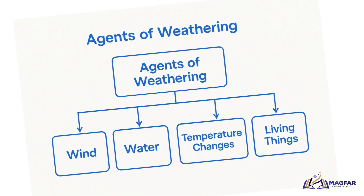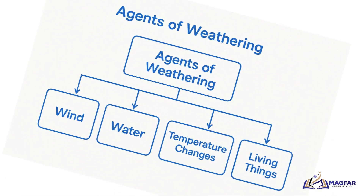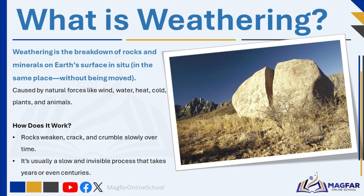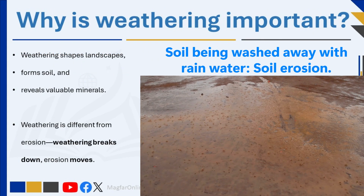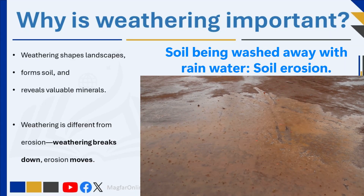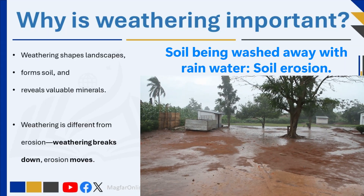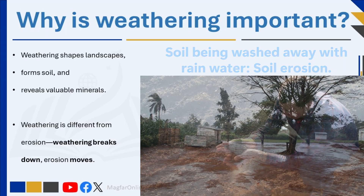This process happens because of various natural forces such as flowing water, moving air, temperature changes, chemical reactions, and even the actions of plants and animals. One important thing to remember is that weathering is usually a slow and invisible process — you won't see rocks breaking apart quickly. It takes many years, even centuries, for noticeable changes to occur. Weathering prepares material for erosion, but it is not erosion itself, because erosion involves movement while weathering only involves breaking down.